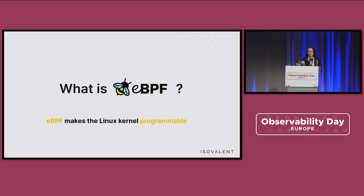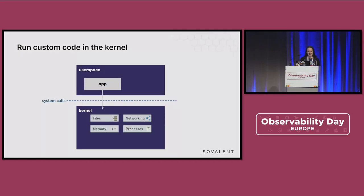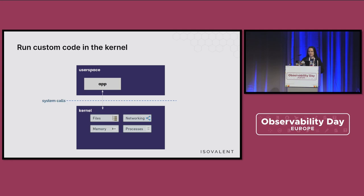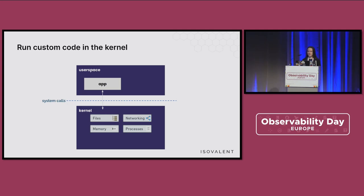Here we have a simple diagram. Normally, software engineers write code running in userspace, and most applications will just run in userspace. But practically all code that anyone writes — any tool that does something — relies on the kernel, on the operating system, to do a ton of stuff. This is usually done via syscalls. The application makes system calls to ask the kernel to do things on its behalf, like file operations — open, read, write — network calls, running processes, and resource management.